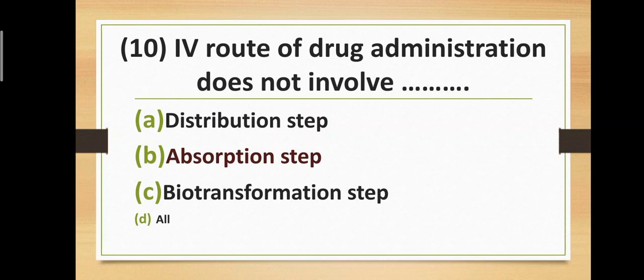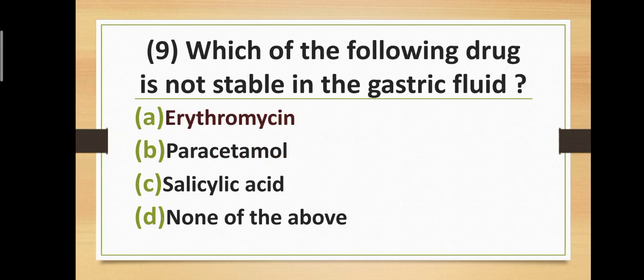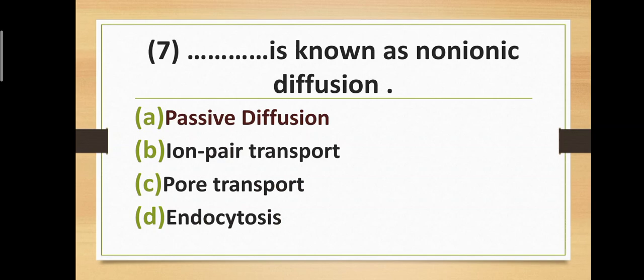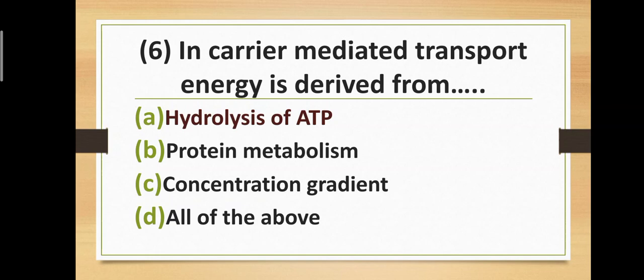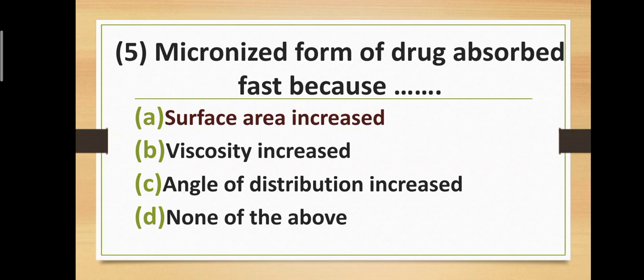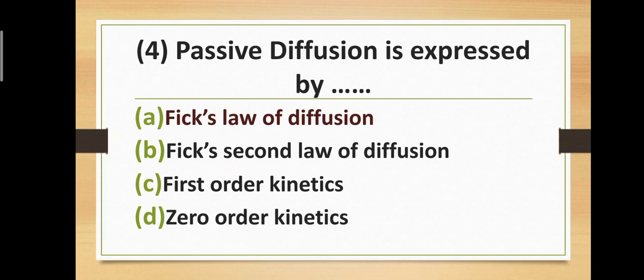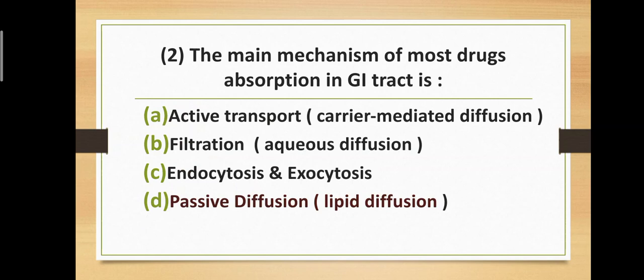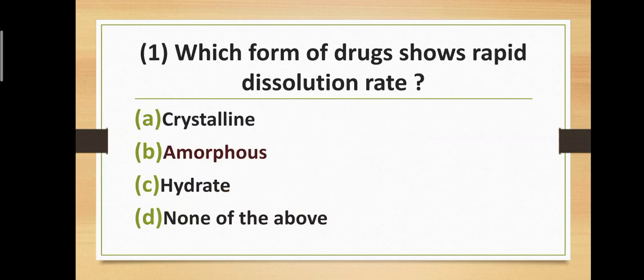Quick recap: IV route does not involve absorption step. Erythromycin is not stable in gastric fluid. Active transport is a carrier-mediated transport system. Passive diffusion is known as non-ionic diffusion. In carrier-mediated transport, energy is derived from hydrolysis of ATP. Micronized form of drug absorbs faster because surface area increases. Passive diffusion is expressed by Fick's law. Oral route leads to first pass effect. Main mechanism of GI absorption is passive diffusion. Amorphous form shows rapid dissolution rate.